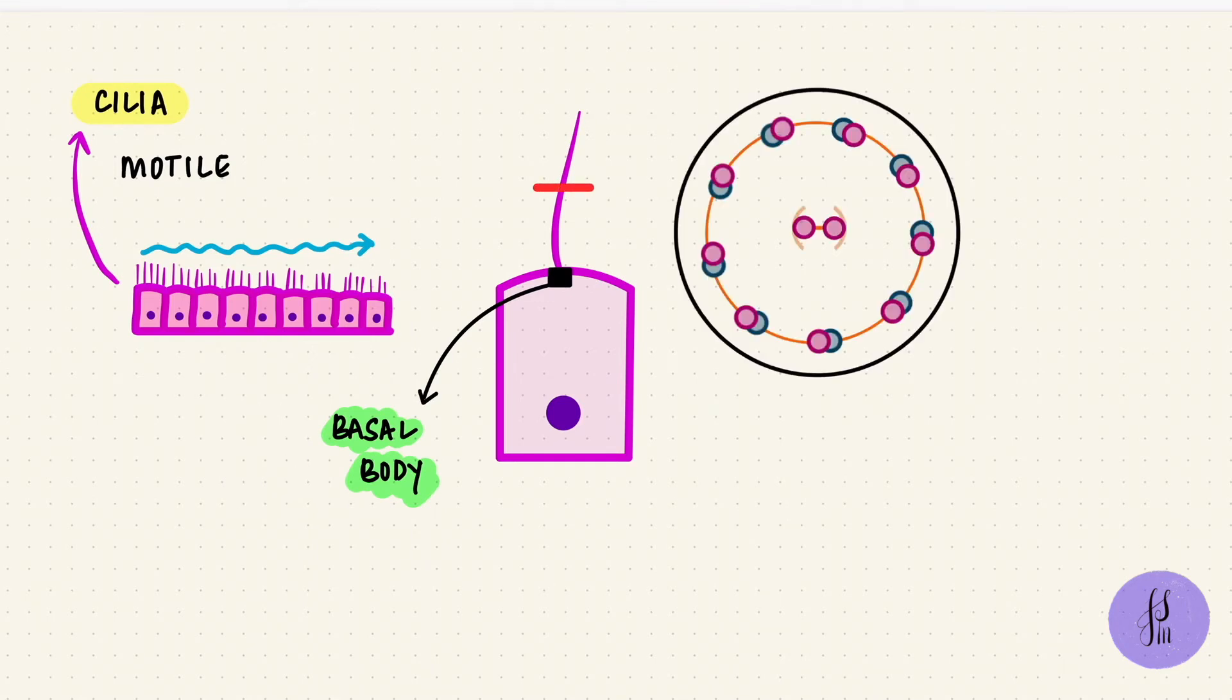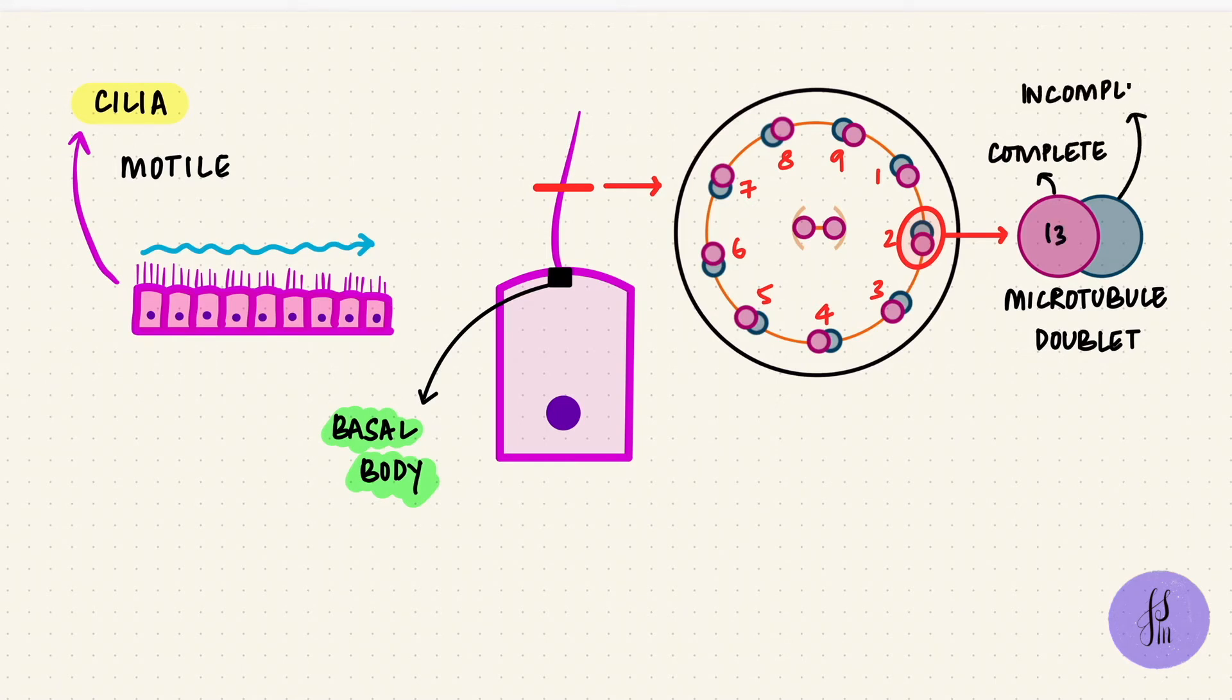If we take a cross section of a cilium again, we see the microtubule arrangement: nine doublets at the periphery. Each one has one complete microtubule which has 13 units and one incomplete microtubule with 11 units. So these are doublets, not triplets like in the centriole. Also, there are two complete microtubules in the center. That wasn't there in a centriole. So this is a 9 plus 2 arrangement.